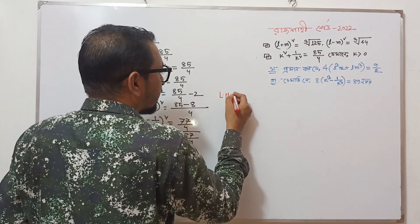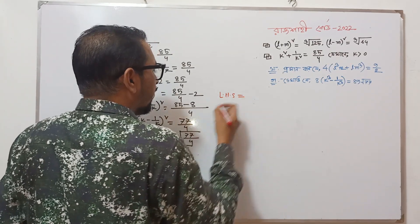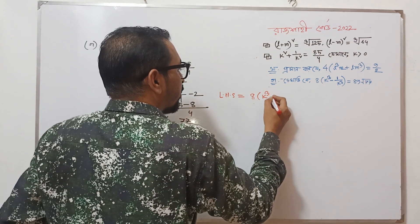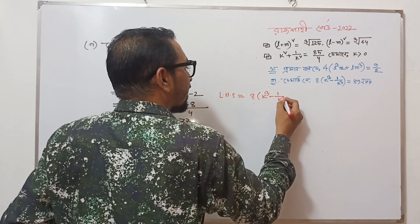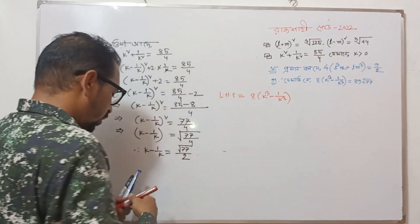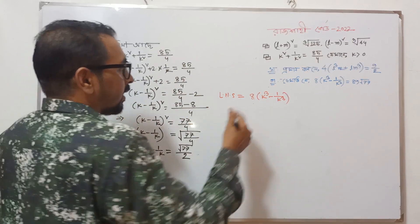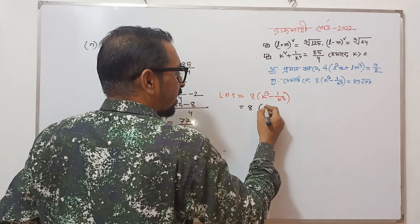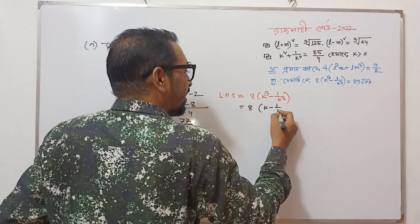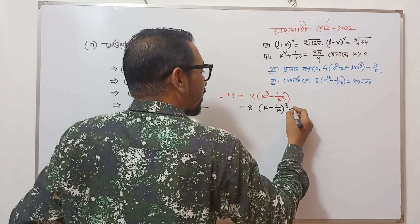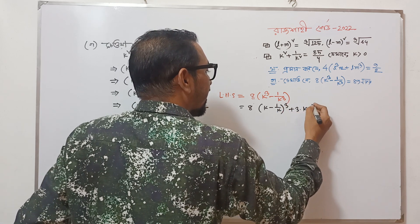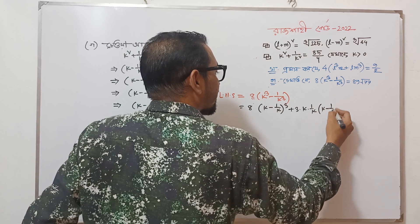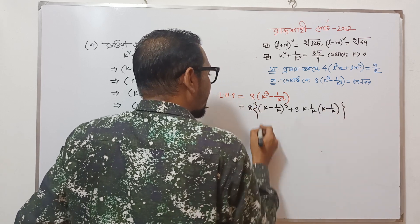Left hand side: 8 into k³ minus 1 divided k³. We use: a³ minus b³ equals a minus b whole cube plus 3ab into a minus b.